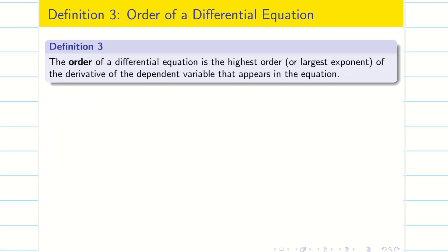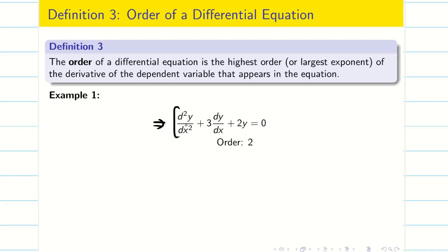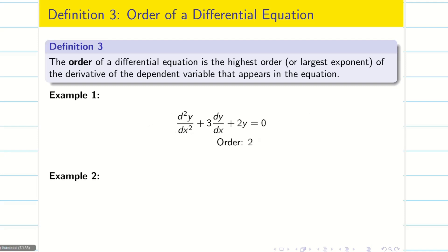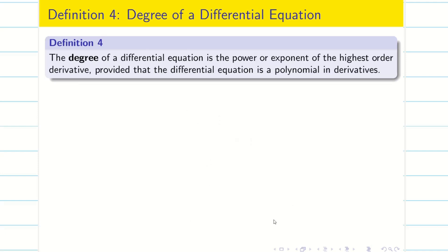Next, we are going to see what is meant by the order of a differential equation. The order of a differential equation is the highest order of the derivative of the dependent variable. For example, if the highest derivative is 2, then the order is 2. In another example, if the highest derivative is 1, then the order of the differential equation is 1.